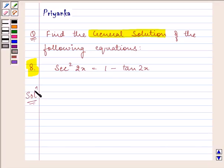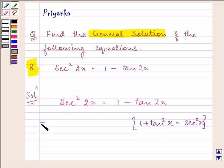First of all, let us start by factorizing the given equation. As we studied in our earlier classes, according to one of the identities, 1 + tan²x can be written as sec²x. Using this identity, we can write this as 1 + tan²2x = 1 - tan 2x.